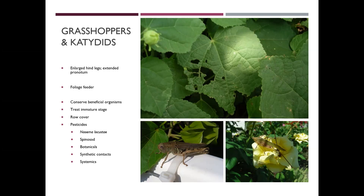Grasshoppers and katydids are present from spring through fall, and it's going to be easier to kill them earlier in the year. Not only are those immature grasshoppers and katydids smaller, but they don't have wings yet, so they can't fly away from whatever you're trying to do to kill them. A lot of people send me pictures of immature grasshoppers and say they don't want to kill it because it's so cute — but they turn into adults and can really do some damage.